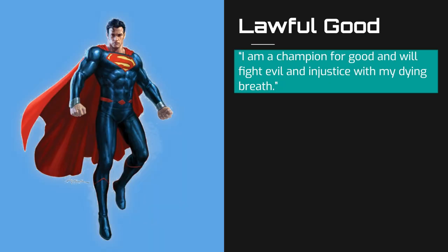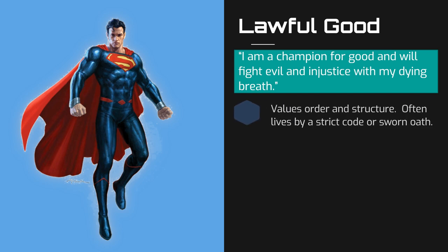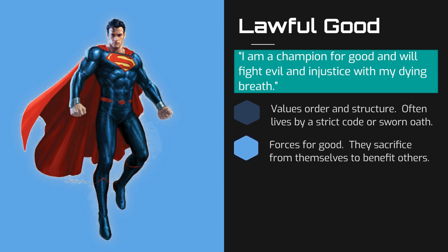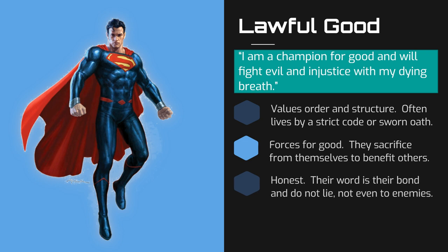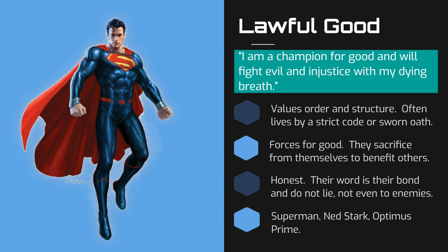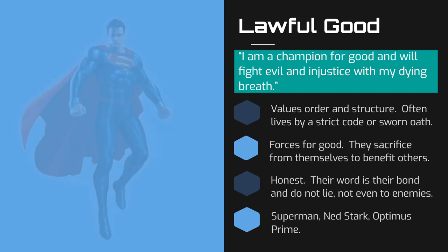Let's look at the nine alignments in turn, starting with lawful good. Lawful good characters value structure, order, and laws. They might have sworn an oath to a church or a cause they believe in. They are also forces for good — willing to help those in need and protect the weak. Although they tend to obey authority, they always place goodness first and would not blindly follow orders if doing so would unjustly inflict harm on others. Lawful good characters are honest and trustworthy; their word is their bond, and they would avoid telling a lie even to an evil opponent. Examples include the fabled knights in shining armor, noble samurai, Superman, Ned Stark, or Optimus Prime.